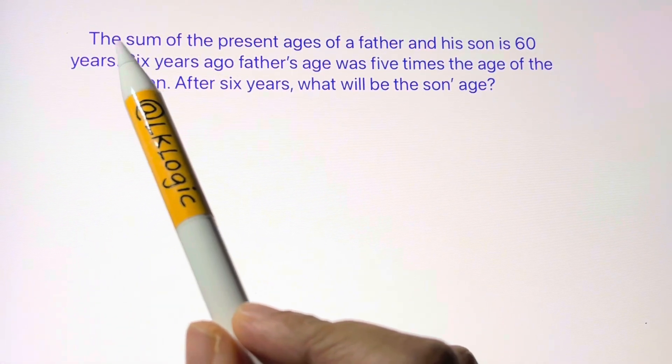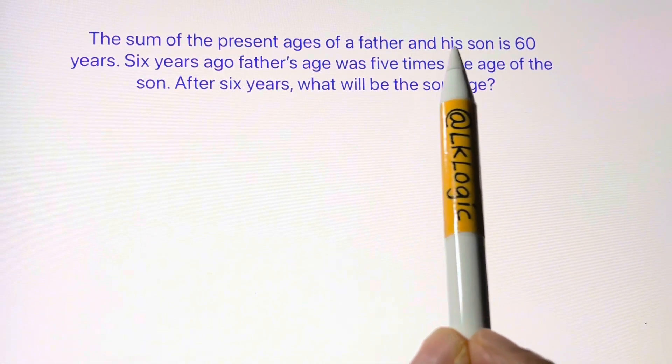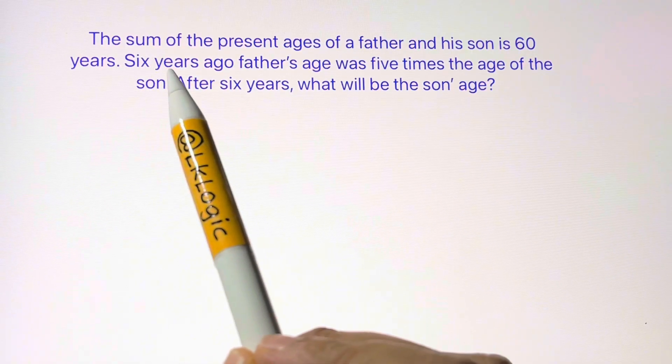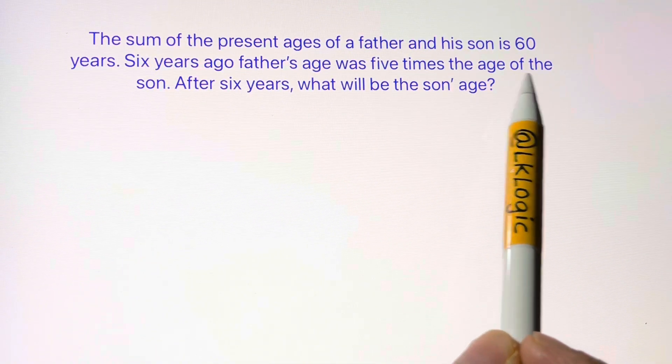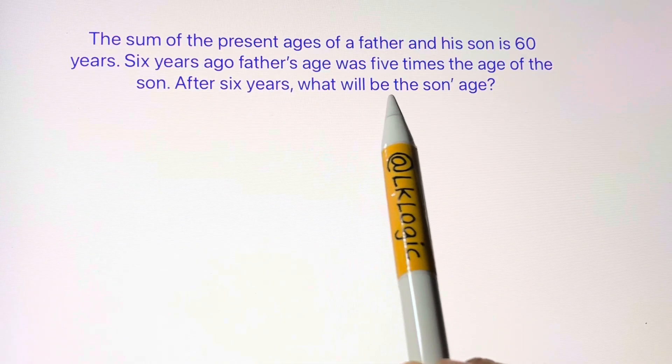Here we have a nice question: The sum of the present ages of a father and a son is 60 years. Six years ago, father's age was five times the age of the son. After six years, what will be the son's age?